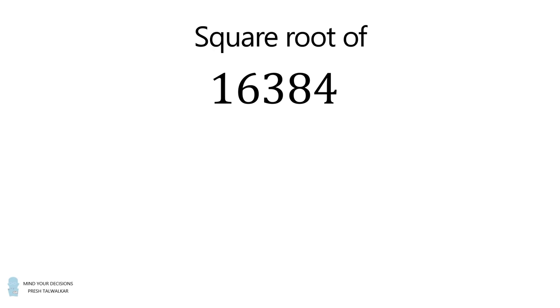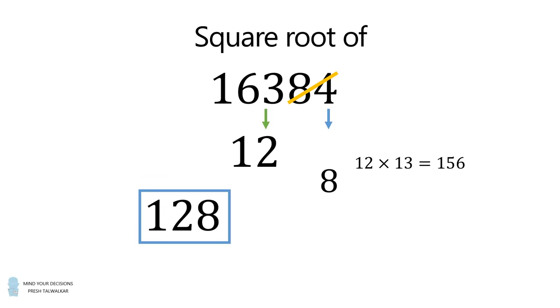Let's calculate the square root of 16384. From the last digit, we know the two options are either 2 or 8. Then, we cross out the last two digits. We want the square that's closest to 163 without exceeding 163. This will be 12 squared, which is 144. We now take 12 multiplied by 1 more than itself, which is 156. Then, we see that 156 is smaller than 163. So, we take the larger option of 8. Thus, the square root of 16384 is equal to 128.